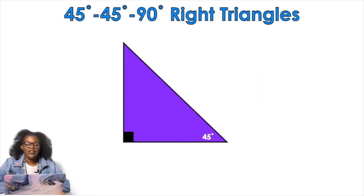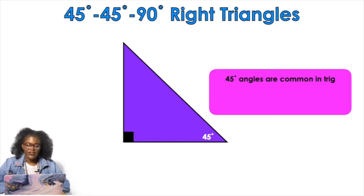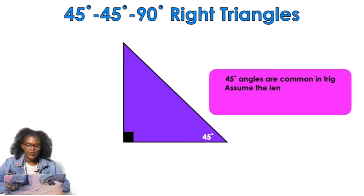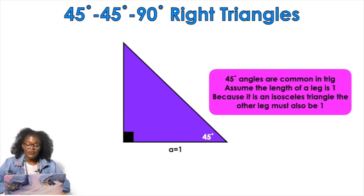The first of the special right triangles we will discuss is a 45-45-90 right triangle. You have a right triangle with a 45-degree angle. We're going to assume that the length of a leg of this triangle is one, so a equals one. Because this is an isosceles triangle, the other leg must also be one.